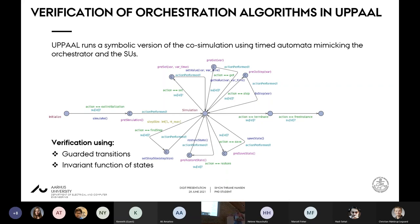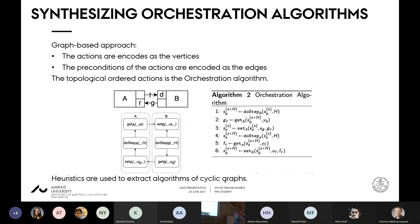I'll briefly provide some insight to how to do this. The verification, we do it in a model checker called UPPAAL, where we run a symbolic version of the co-simulation using timed automata that are mimicking a symbolic version of the co-simulation. The way we do verification of the algorithm is that we have some guarded transitions in the timed automata and invariant functions of the states. That basically allows us to catch mistakes in the orchestration and highlight them to the user.